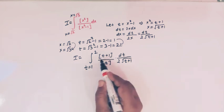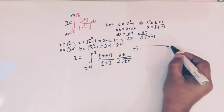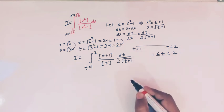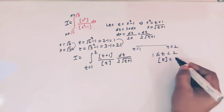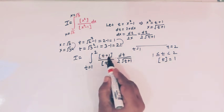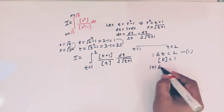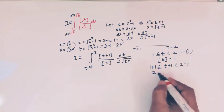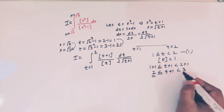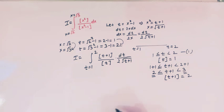Now we make use of the definition of the greatest integer function. Since t varies from 1 to 2, when t lies between 1 and 2, the greatest integer of t equals 1. Adding 1 throughout, t plus 1 lies between 2 and 3, so the greatest integer of t plus 1 equals 2.